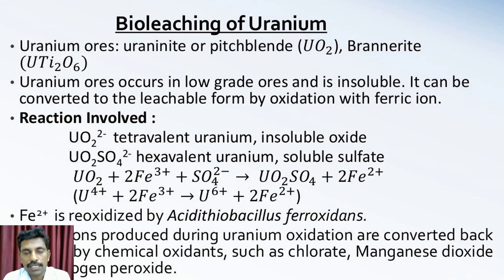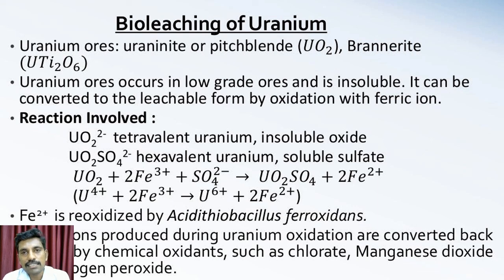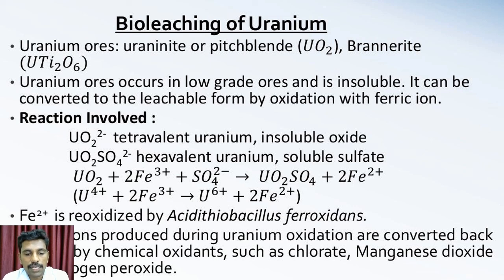Temperature should be around 35 degrees centigrade. The overall chemical reaction may be written as uranium dioxide plus ferric sulfate, which produces uranyl sulfate plus ferrous sulfate. Ferric ions are re-oxidized by Acidithiobacillus ferrooxidans. Ferrous ions produced during uranium oxidation are converted back into ferric ions by chemical oxidation such as chlorate, manganese dioxide, or hydrogen peroxide.